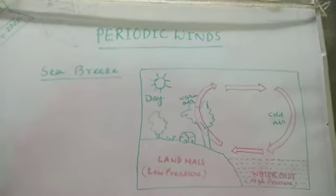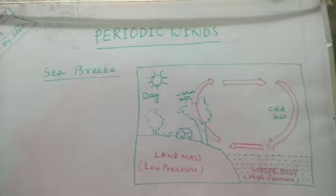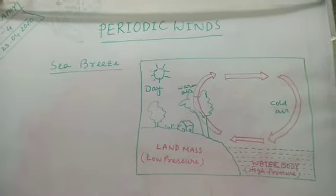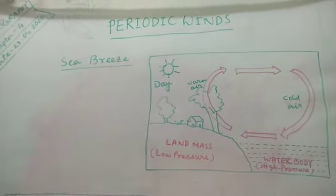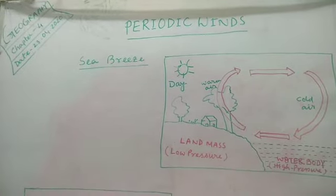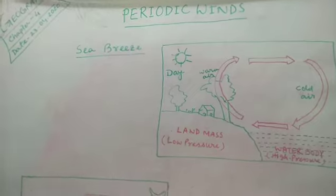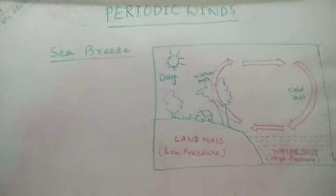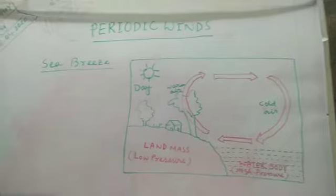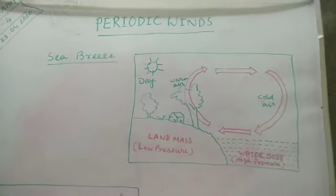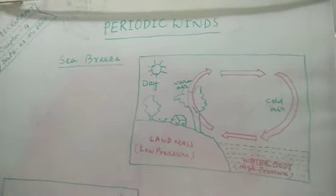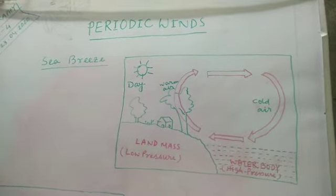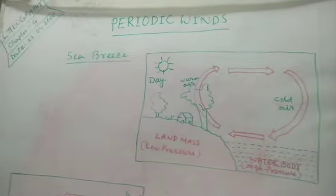Good afternoon students. In my previous class I discussed about shifting of air pressure belts, and today I am going to discuss about periodic winds. A periodic wind is a particular wind that comes at a particular time or for a particular season. Sea breeze and land breeze are also considered as periodic winds, as well as monsoon, which is also considered a periodic wind.